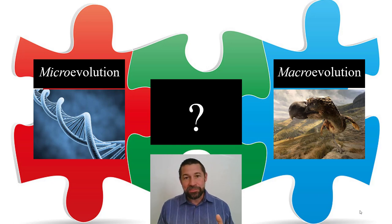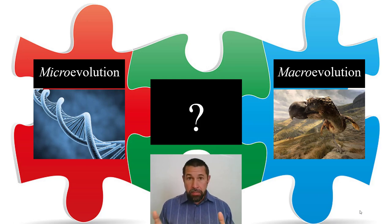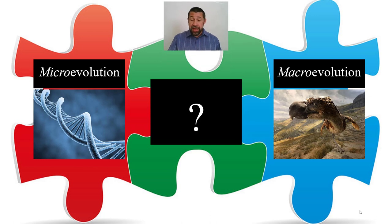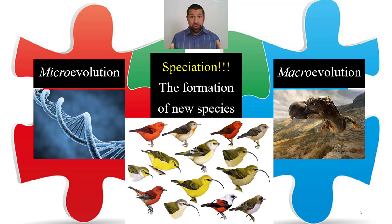How do we complete this puzzle? How do we connect microevolution — small changes in allele frequencies from one generation to the next — to macroevolution — big, broad patterns in the fossil record over millions of years? The answer is our focus today: speciation, the formation of new species, connects micro with macroevolution.